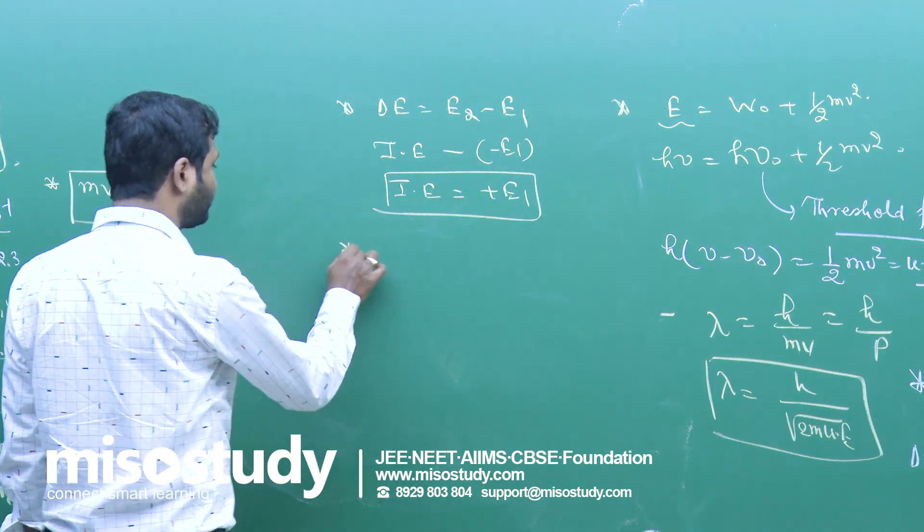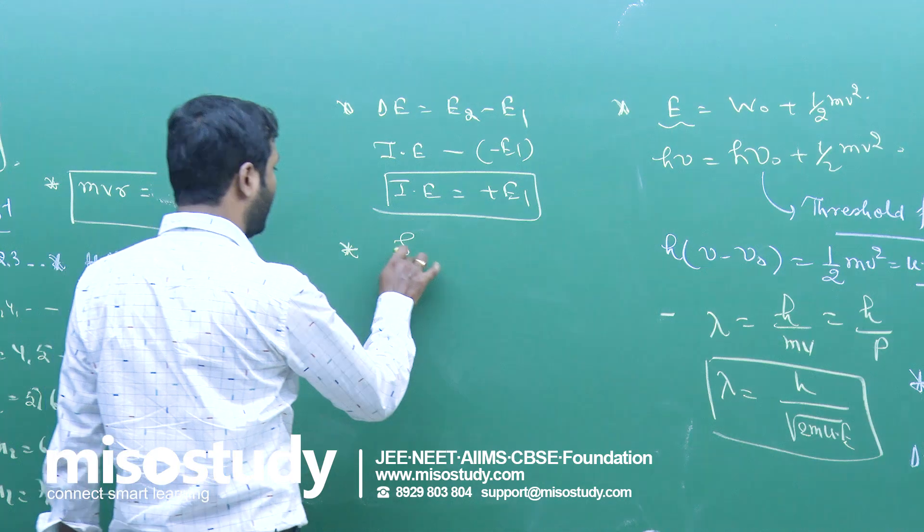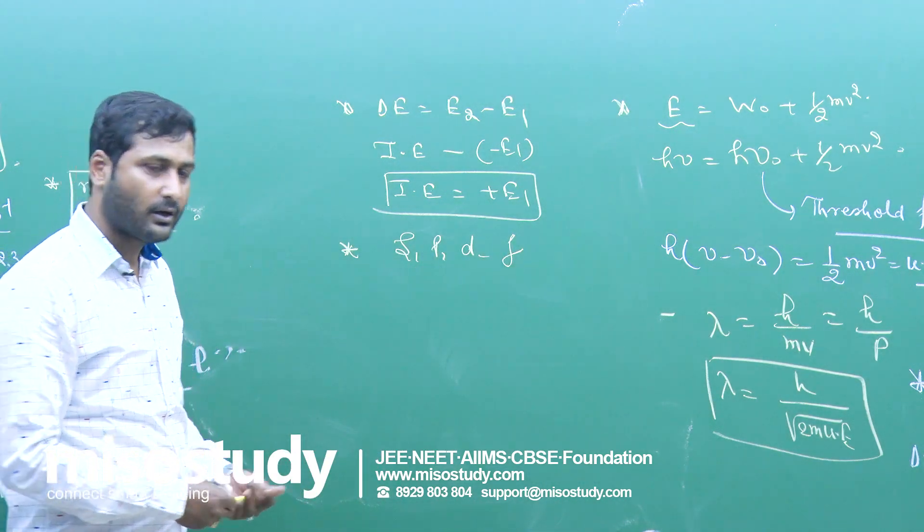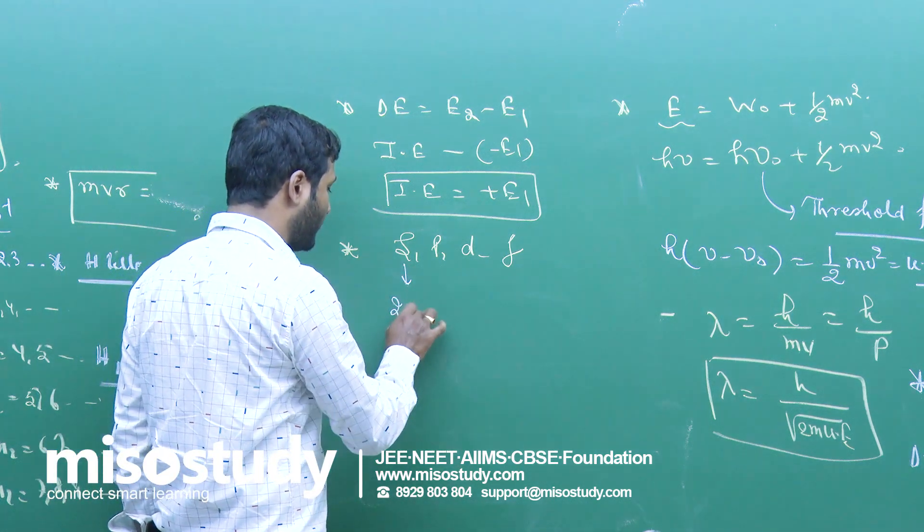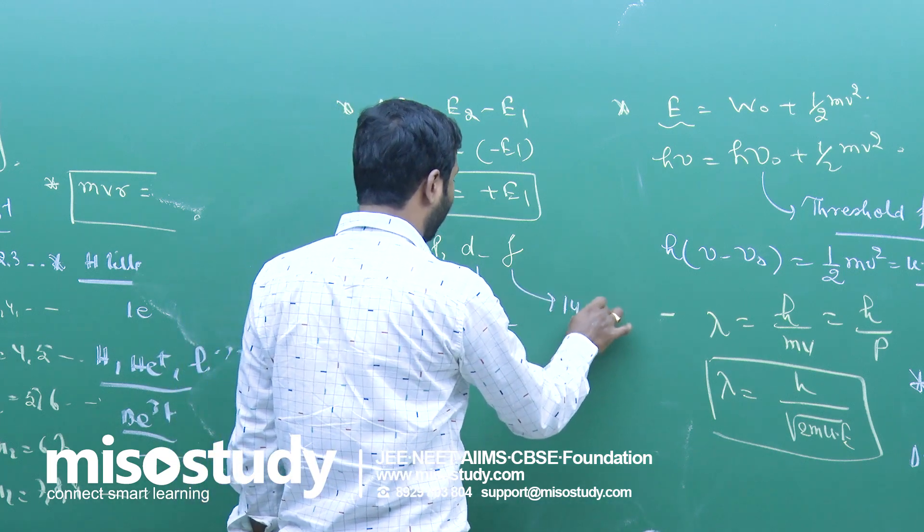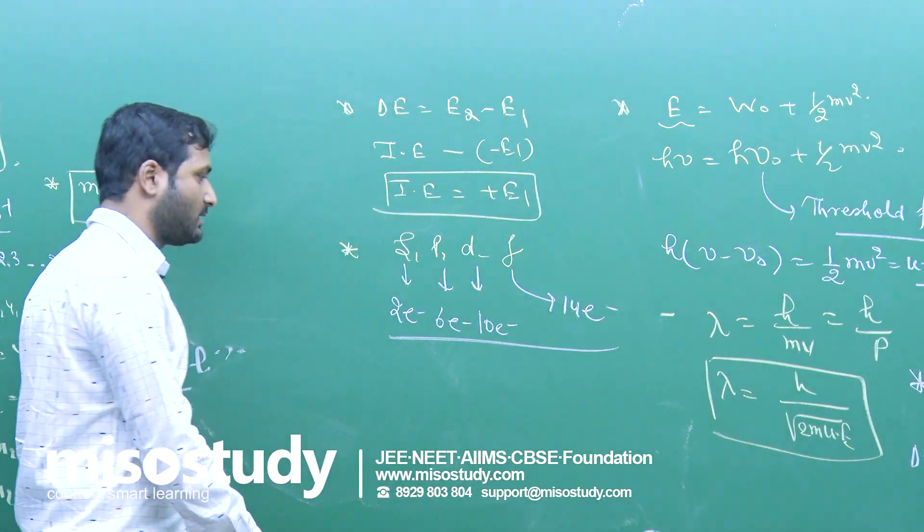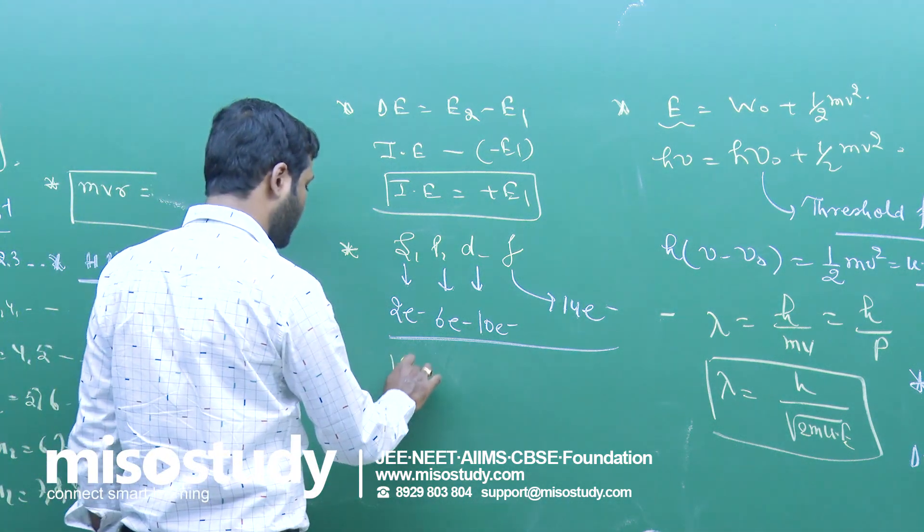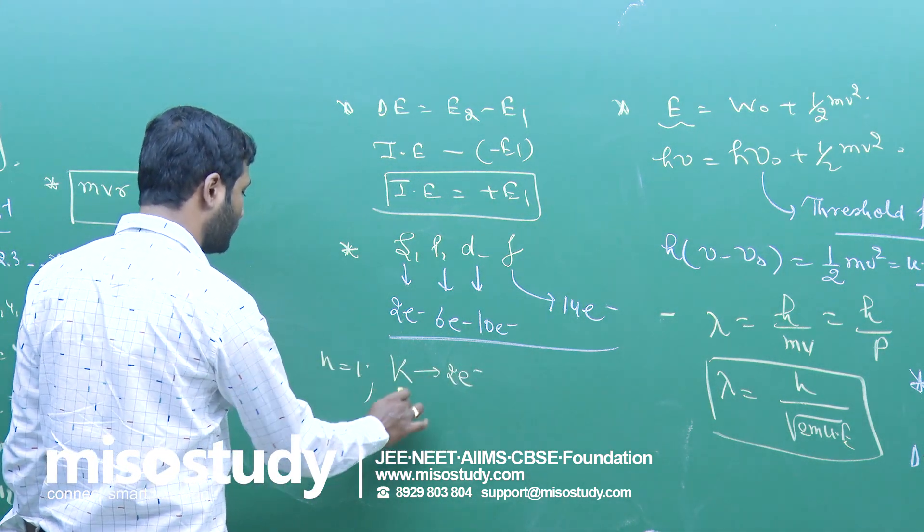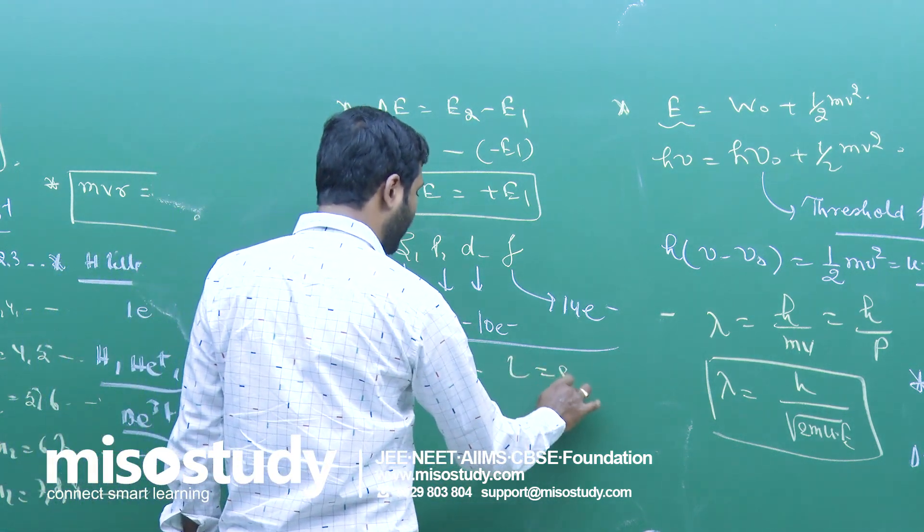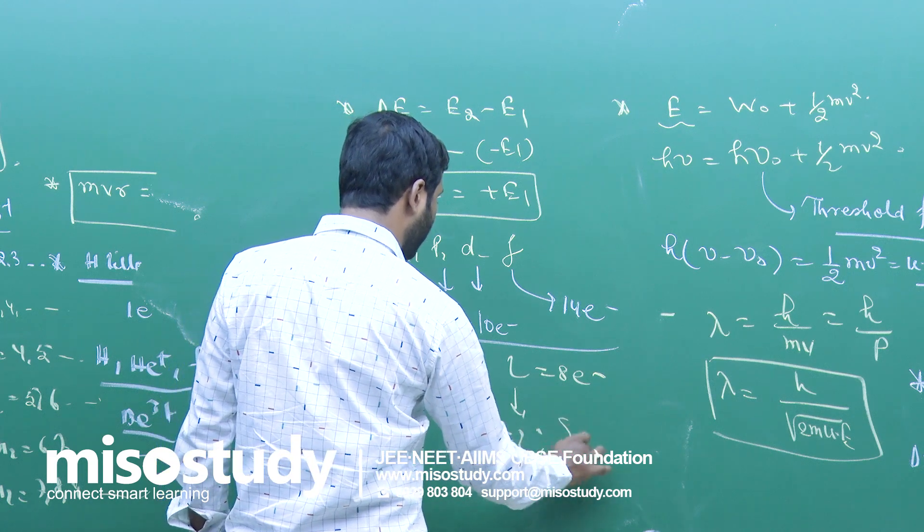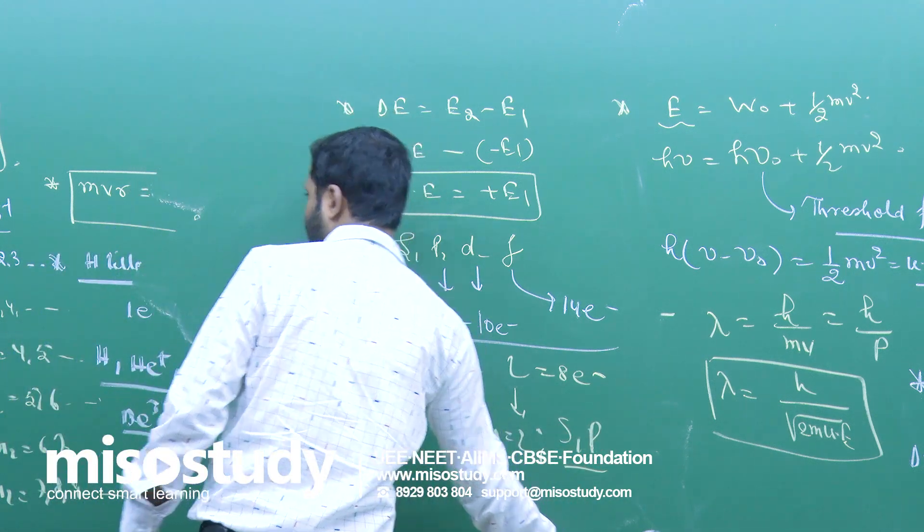Next we have sub-shells S, P, D, and F. S has 2 electrons maximum, P has 6 electrons maximum, D has 10 electrons maximum, and F has 14 electrons maximum. In a shell, suppose if I take K, K has maximum electron and the value n equals 1, so K has only 1 sub-shell. L has 8 electrons, so in this case n will be equal to 2, so it will have 2 sub-shells S and P.